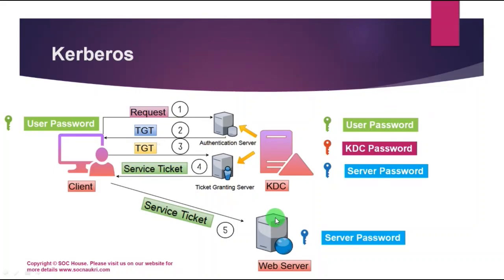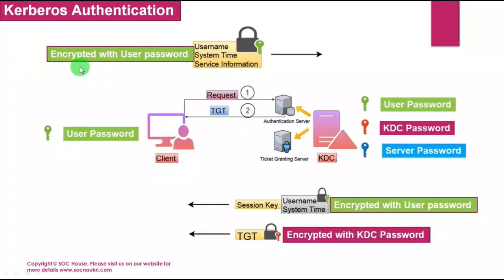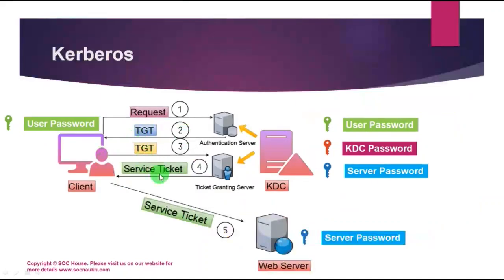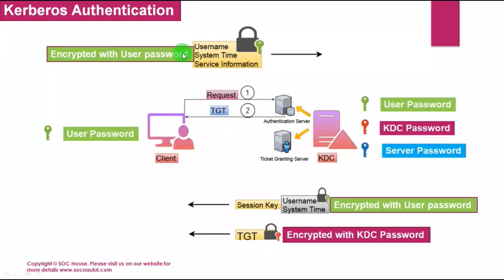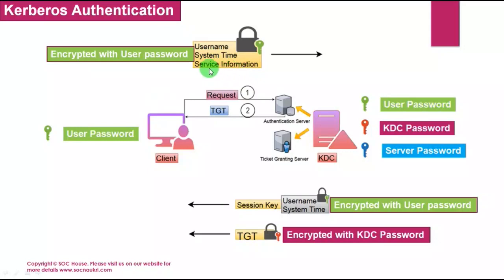This is how the Kerberos authentication protocol works. For more details on TGT tickets and service tickets, you can refer to the slides below. Let us understand Kerberos with the image below. The client wants to access a web server's resources. The client first proves its identity to the Authentication Server by sending an encrypted request message containing the username, system time, and the service information for the resource the user wants to access.